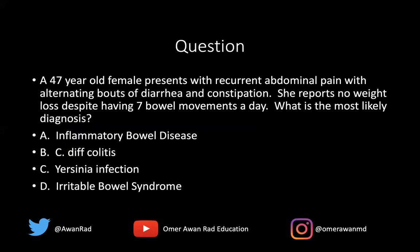An 87-year-old female presents with recurrent abdominal pain and alternating bouts of diarrhea and constipation, with no weight loss despite seven bowel movements a day. In IBD, you typically lose a lot of weight and the diarrhea is often bloody. The key here is the alternating diarrhea and constipation with no weight loss — this is the classic presentation of irritable bowel syndrome, which often affects middle-aged females.